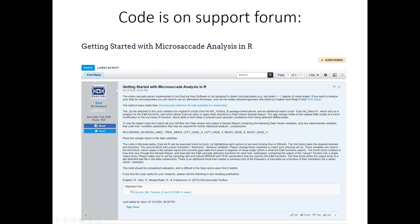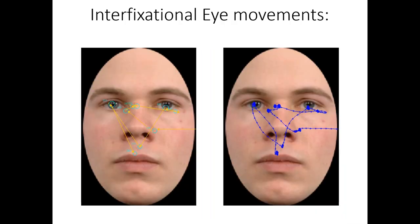Just go to the getting started with data analysis section and you'll find it in there. So what are fixational eye movements? If you're used to looking at gaze data plotted, for example as it is in Data Viewer, with fixations represented by circles, the diameter of the circle giving some idea of the fixation's duration and the centre of the circle being the location of the average x and y coordinates of the samples within that fixation, then it's kind of easy to get the impression that fixations are essentially fixed.